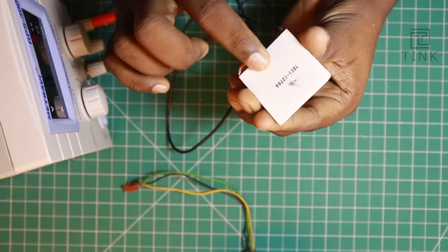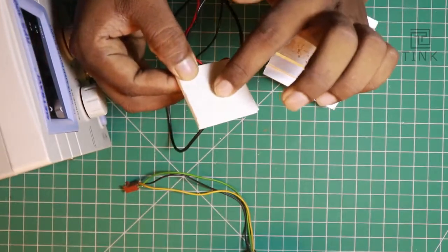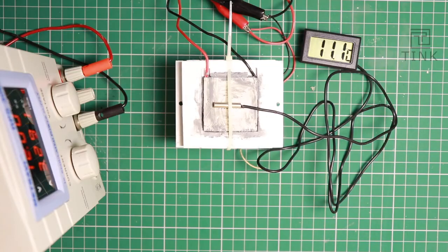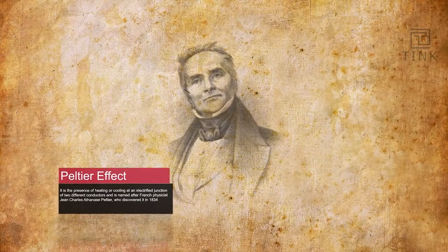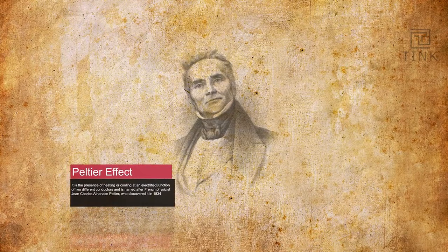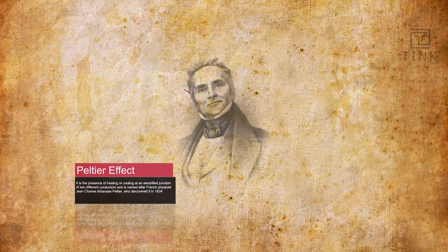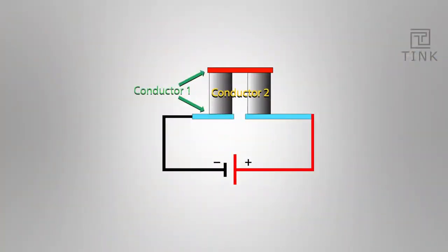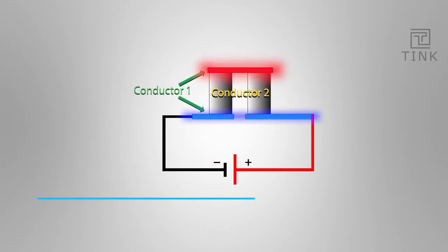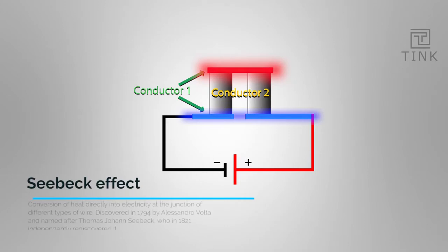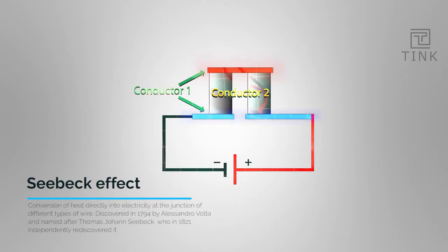If we apply the voltage to this wire, it will be very hot. In 1834, we can use the Peltier module — we can allow the current to pass. The junction of the conductors creates a temperature difference.